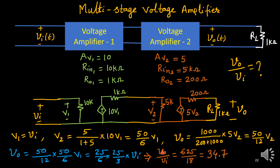So V0/VI simplifies to approximately 34.7. The overall voltage gain is 34.7. Note that with two stages, the overall gain is reduced compared to the ideal combination: in open-loop ideal conditions you might expect 10 × 5 = 50, but here we get 34.7 — a lesser voltage gain due to the mismatch and loading effect between stages.